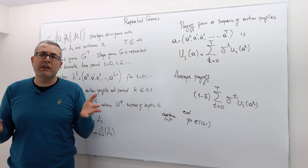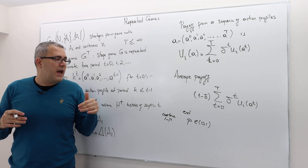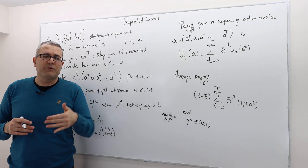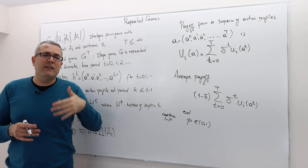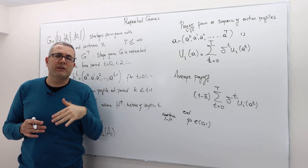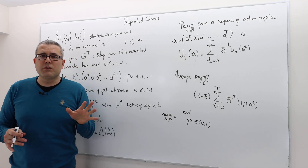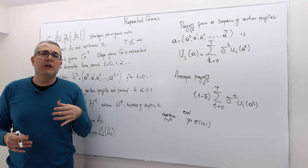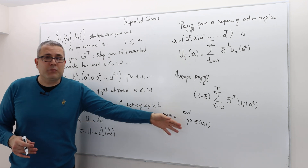If the game doesn't move to the next period, that's the end — they receive their payoffs and leave. If the game continues, once again they come together, play their actions from their sets. Then somebody outside the set of players determines whether the game moves to the next period with the same probability. So with some positive probability, the game keeps continuing.